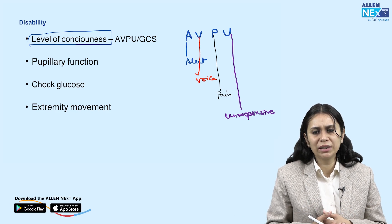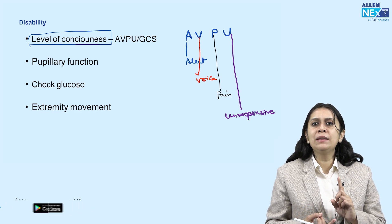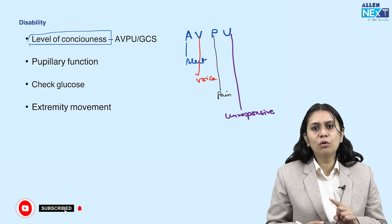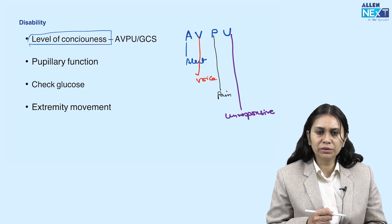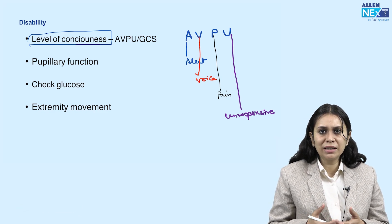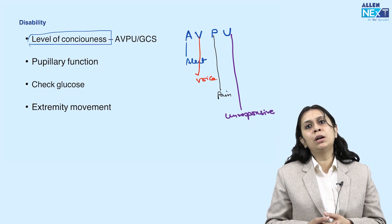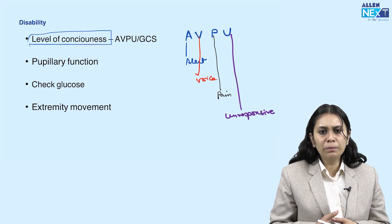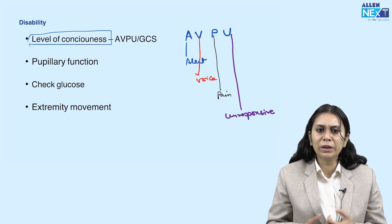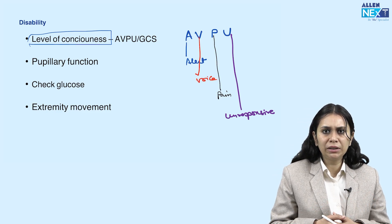The Glasgow Coma Scale (GCS) assesses eye response, motor response, and vocal response. We also check pupillary function, blood glucose, and extremity movement — whether the patient is moving all four extremities — to detect any intracranial threat.